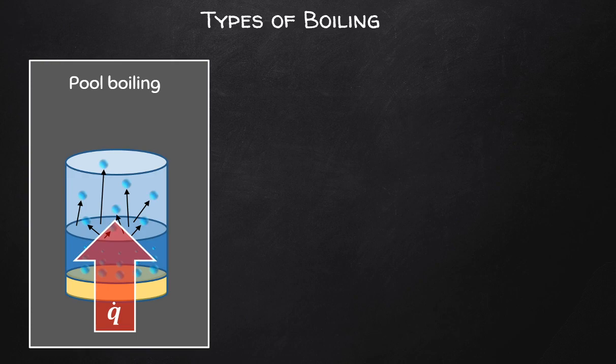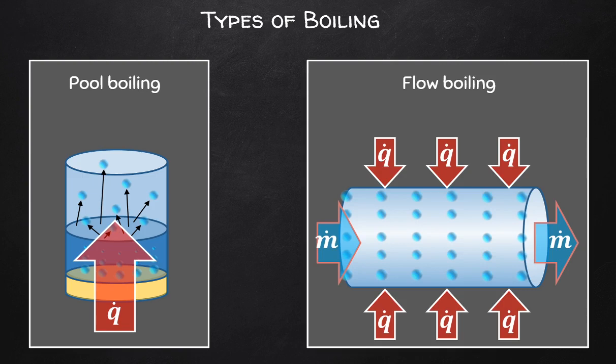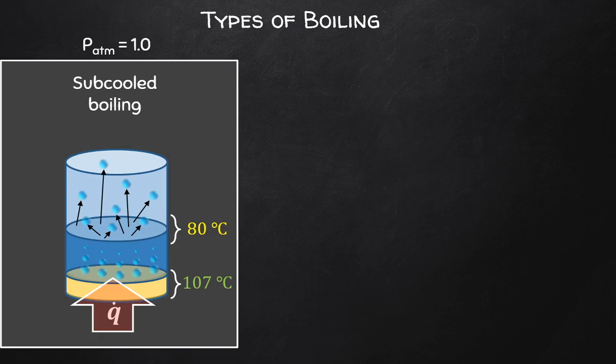Pool boiling happens inside a tank, but as chemical engineers we work with continuous processes, so there is another type called flow boiling — for a flowing fluid within a pipe. We do this in a heat exchanger, exchanging heat from one fluid to another — perhaps a surrounding fluid, electrical coils, a furnace, or radiative heating. There is also a phenomenon called sub-boiling to consider.